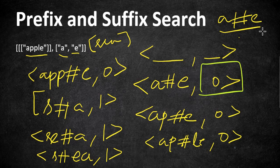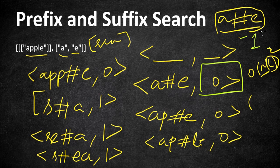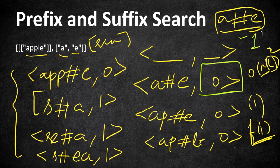Once the HashMap is ready, the f() function simply constructs the key as prefix + '#' + suffix and looks it up in the HashMap. If found, we return the value (the index); otherwise we return minus one. The WordFilter function runs in O(n * l²) time since we generate all prefix and suffix combinations for every word, but f() runs in constant time O(1). Since f() is called much more frequently, this approach is significantly faster overall.